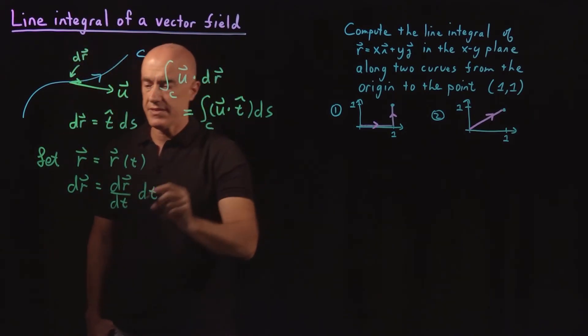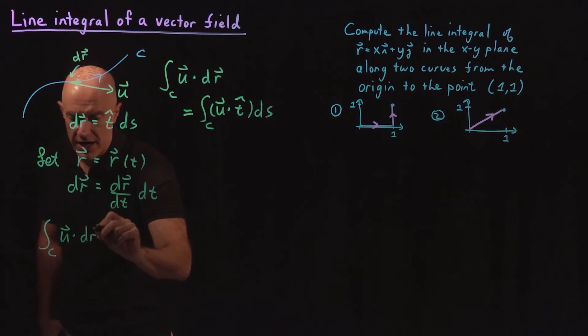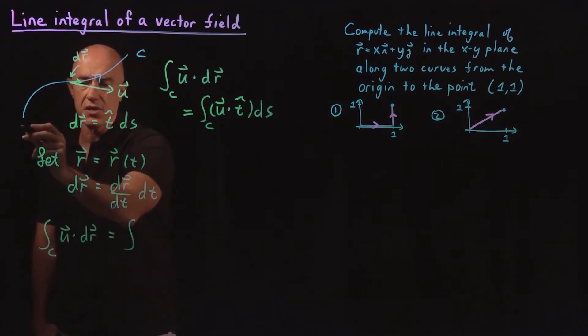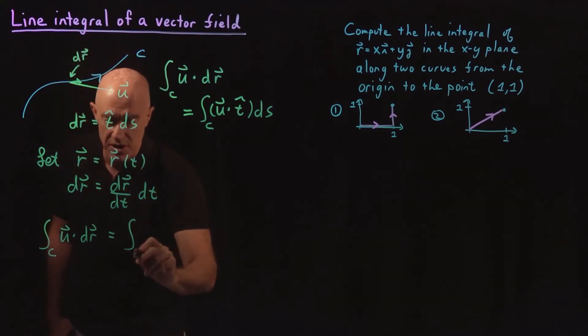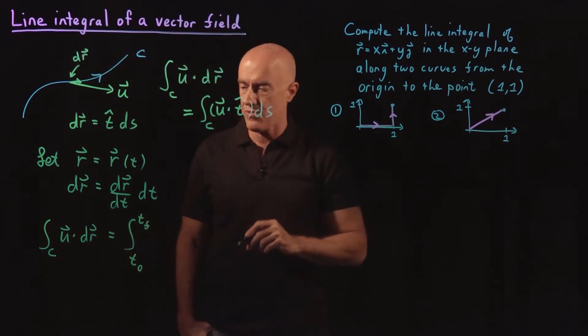So then DR becomes dR/dt dt. And then this integral along the curve of U dot DR becomes the integral from the initial parameter t_0 to the final parameter t_f. So sometimes this is time, sometimes it's some other type of parameter.